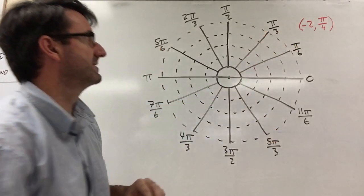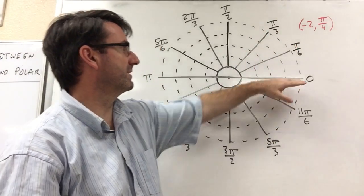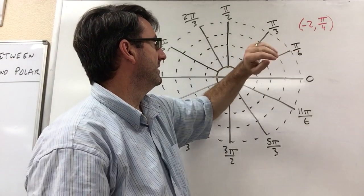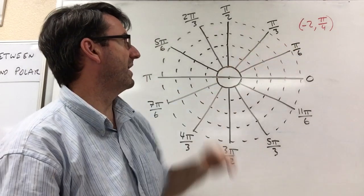halfway between pi over 6 and pi over 3, or you can think of it as halfway between 0 and pi over 2. That's the angle pi over 4.